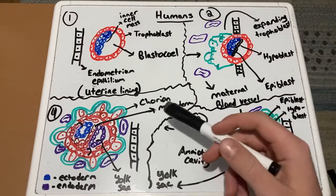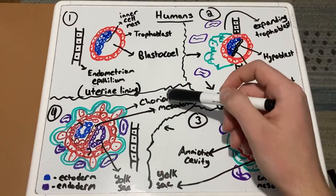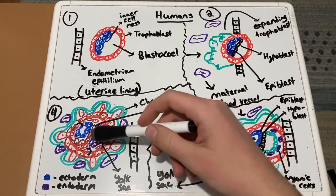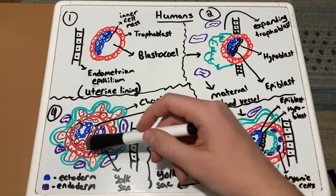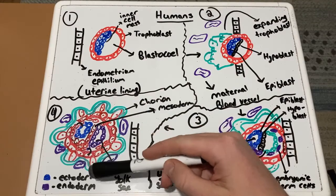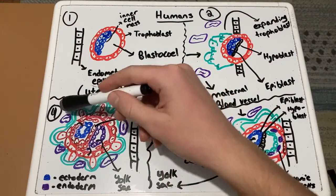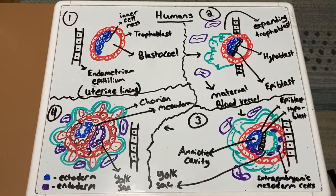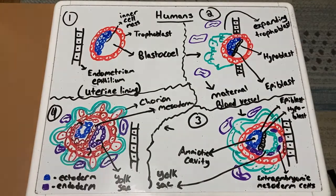As seen in the diagram, the chorion is formed up top, with some mesoderm cells present. The yolk sac is formed in one section, the allantois is visible here, and the amnion is formed along the black line shown at the bottom.